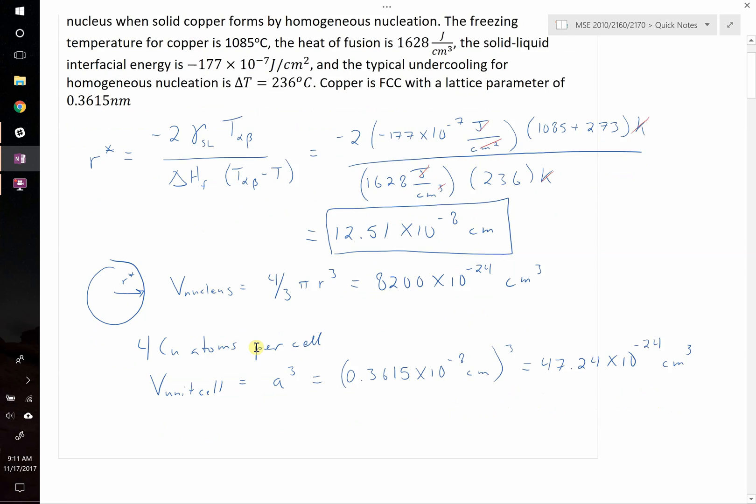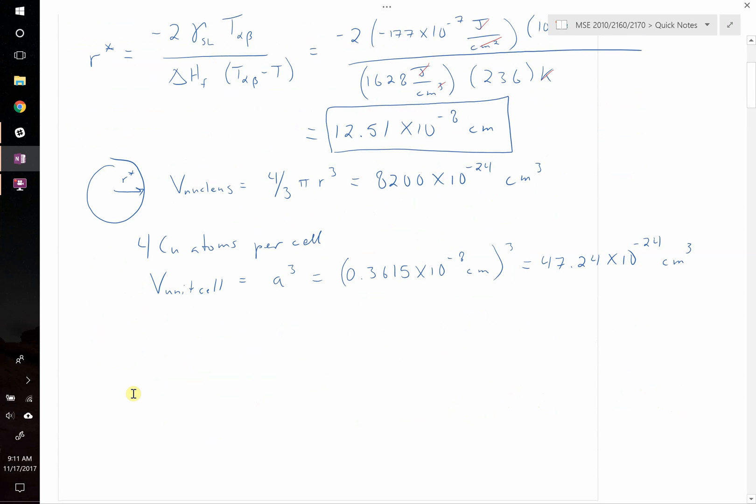So we're almost there. Now we can take the volume of our nucleus and divide it by the volume of our unit cell. 8,200 times 10 to the negative 24, divide this by 47.24 times 10 to the negative 24. And this is equal to 174 unit cells. And since we know that there are 4 atoms per unit cell, then the number of copper atoms is equal to 4 times 174, which tells us that there are 696 atoms per nucleus.